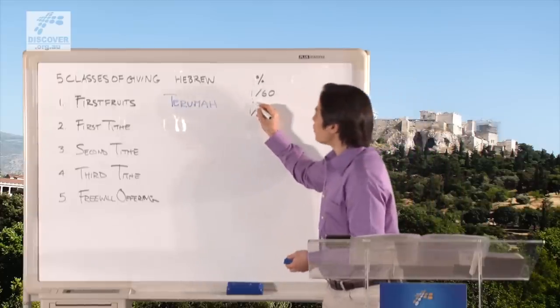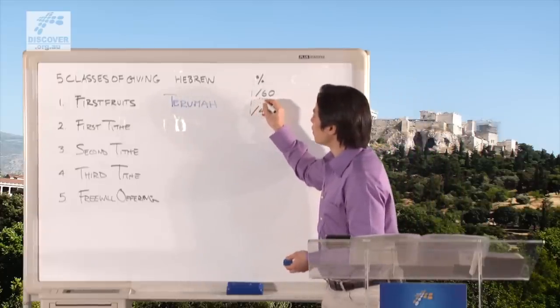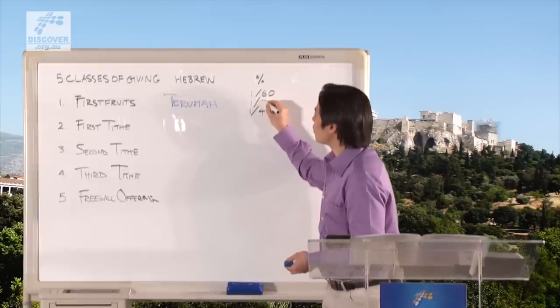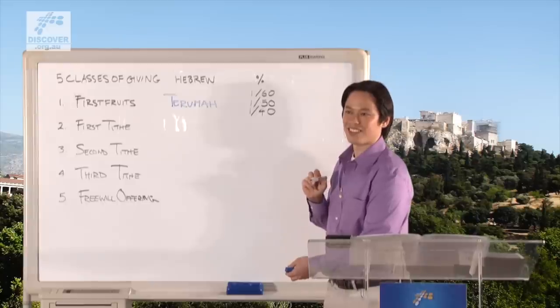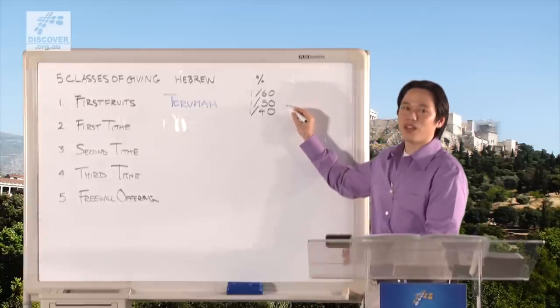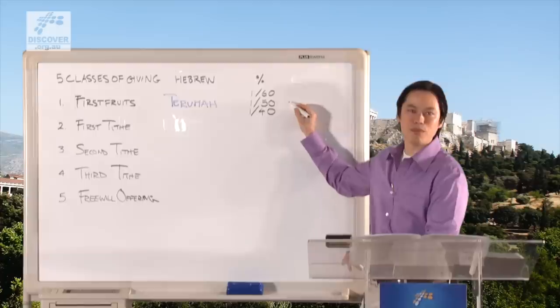And so some people, of course, you know, they're going to take the middle road, and so they say, well, we can't settle it, so let's just do 1/50th. Okay, this was called the middle way, the middle offering.